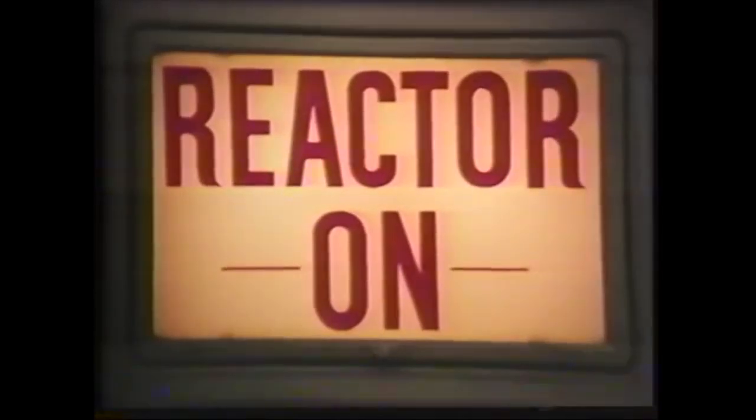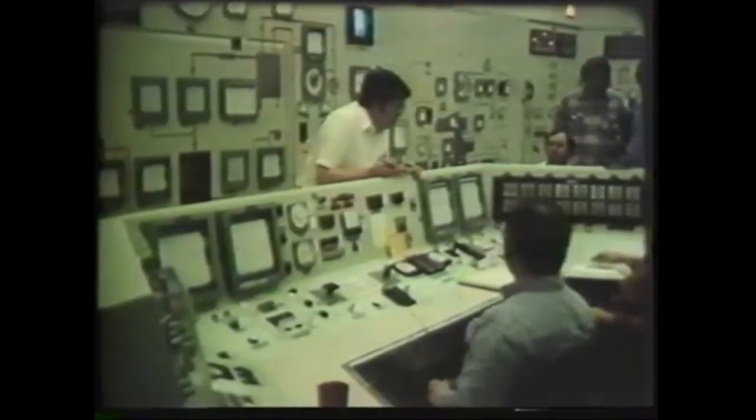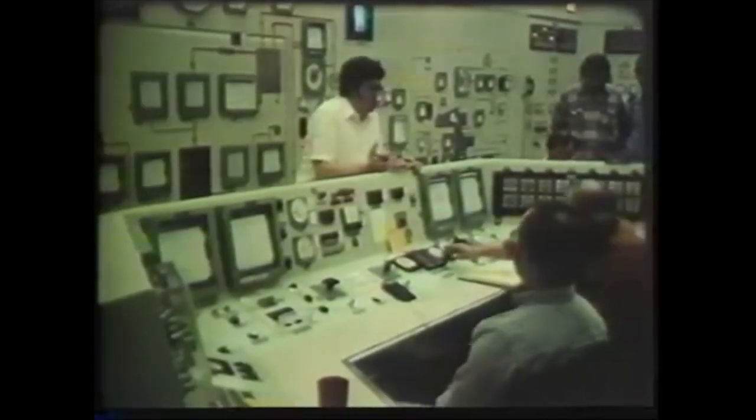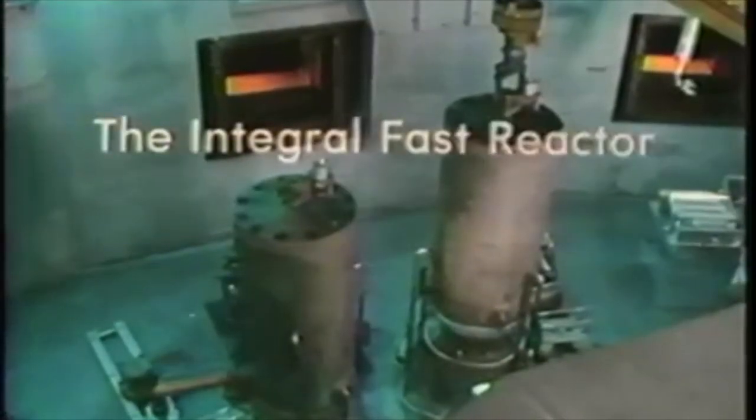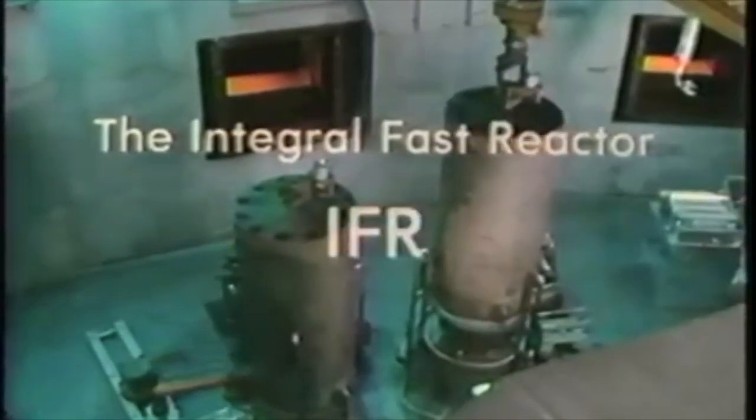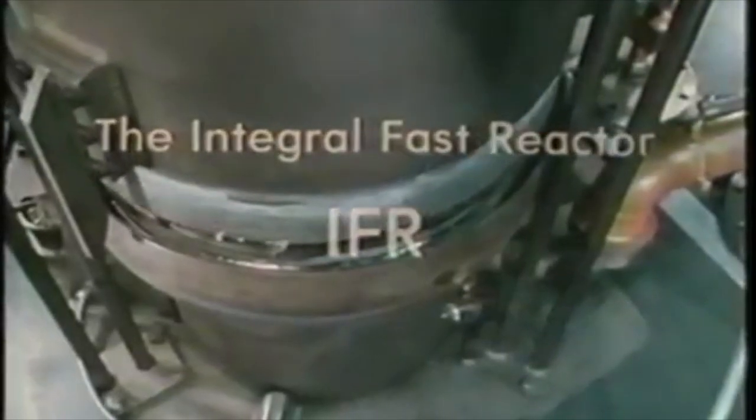While by the 1970s commercial breeder reactors had largely given way to conventional PWR and BWR designs, research into the technology nonetheless persisted. In 1983 the US Department of Energy launched the Integral Fast Reactor program, which sought to address the major shortcomings of previous breeder designs.